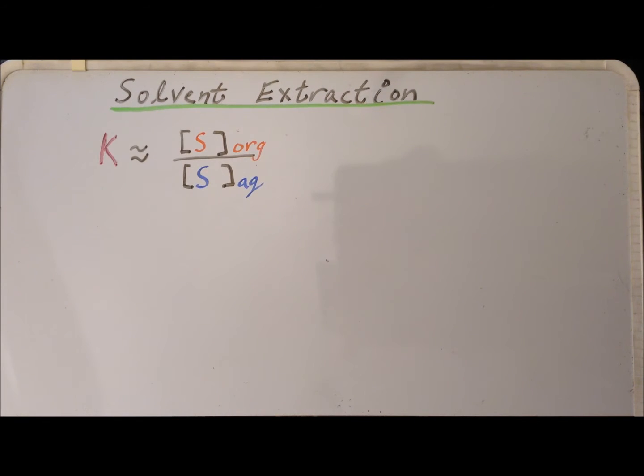We can define a partition coefficient K, which is essentially equal to the concentration of our solute in the organic layer divided by its concentration in the aqueous layer. The reason why this is not an exact equality is that the partition coefficient is technically the ratio of the activities of the solute in the various solvents rather than simply its concentration. But for most purposes, we're justified in using just the concentrations, and that's what we're going to do in this derivation.